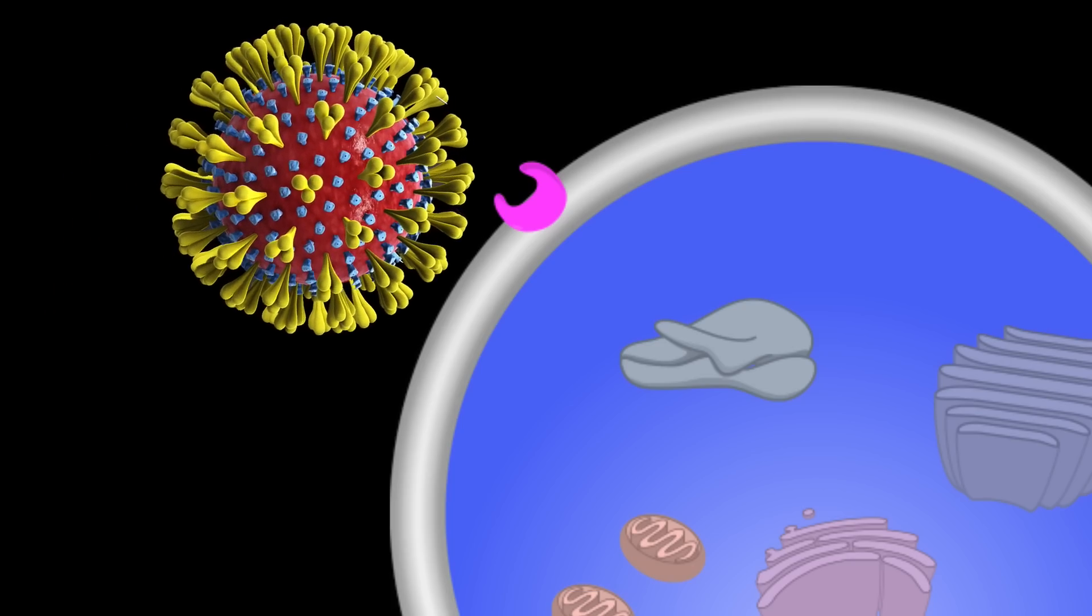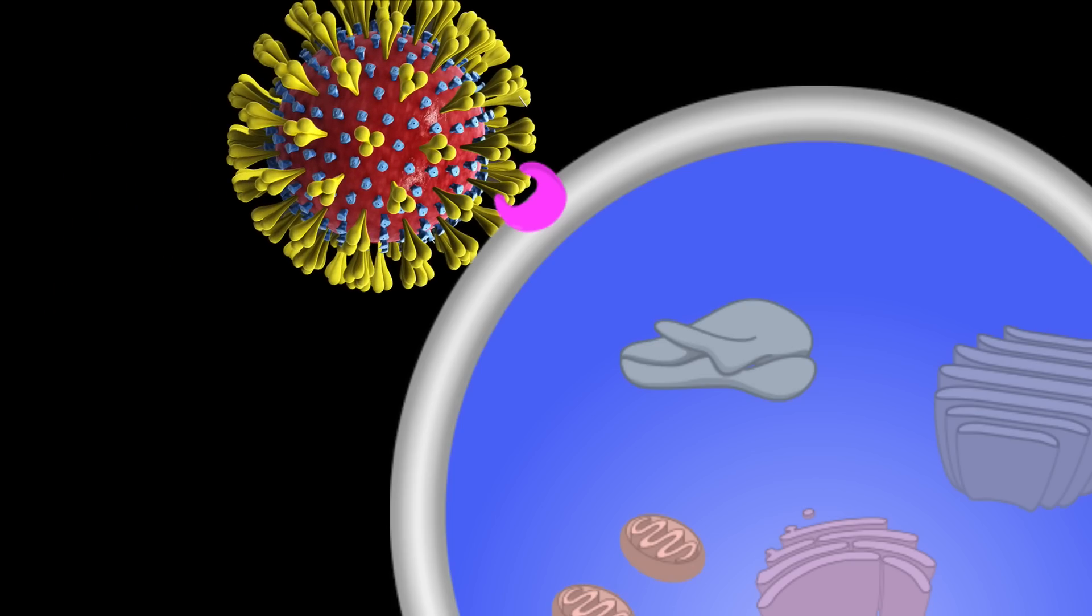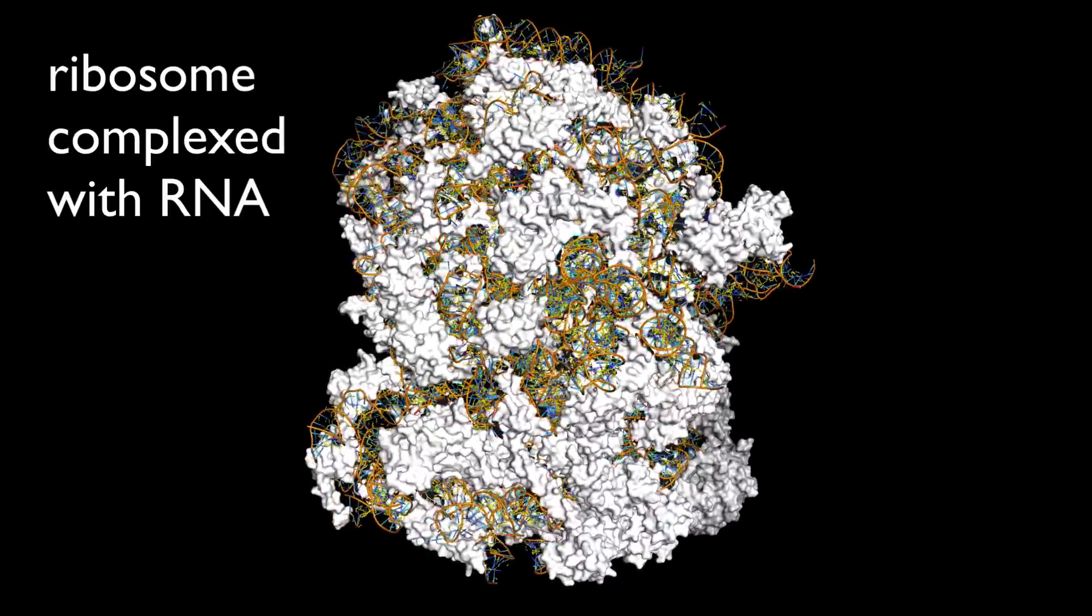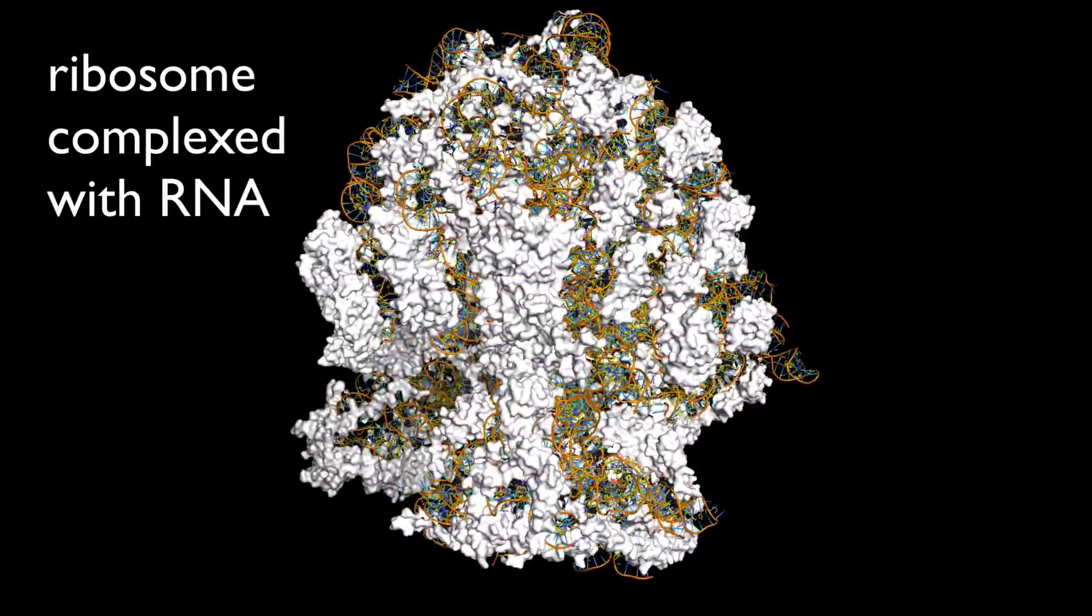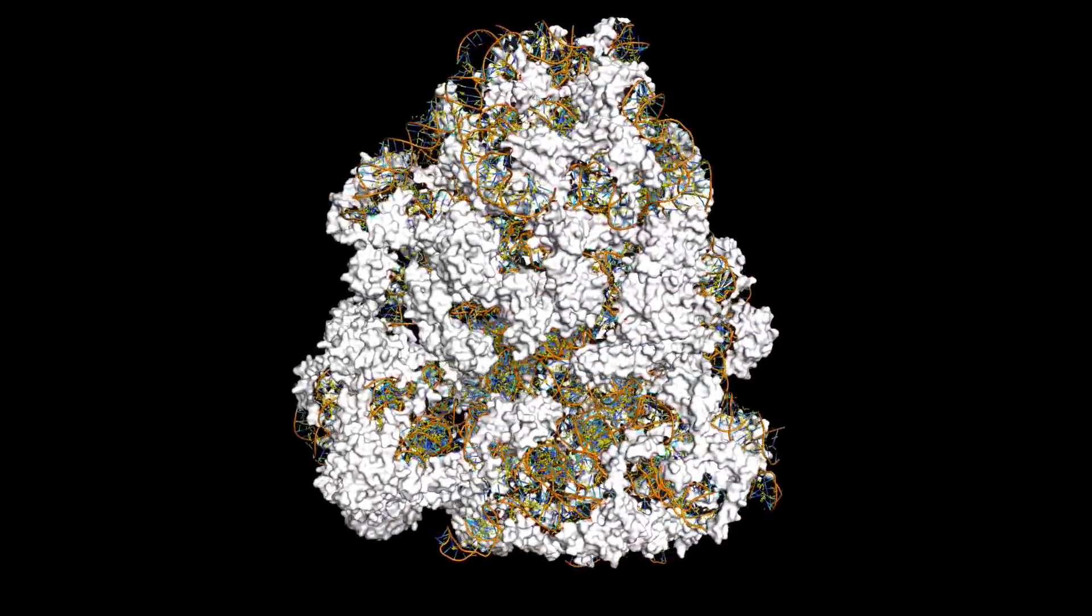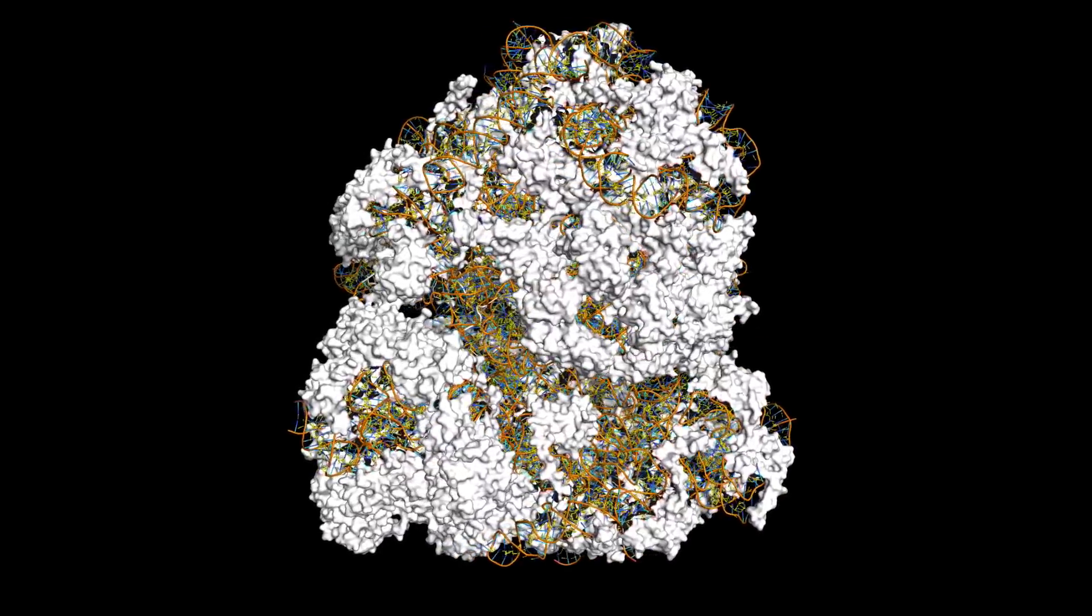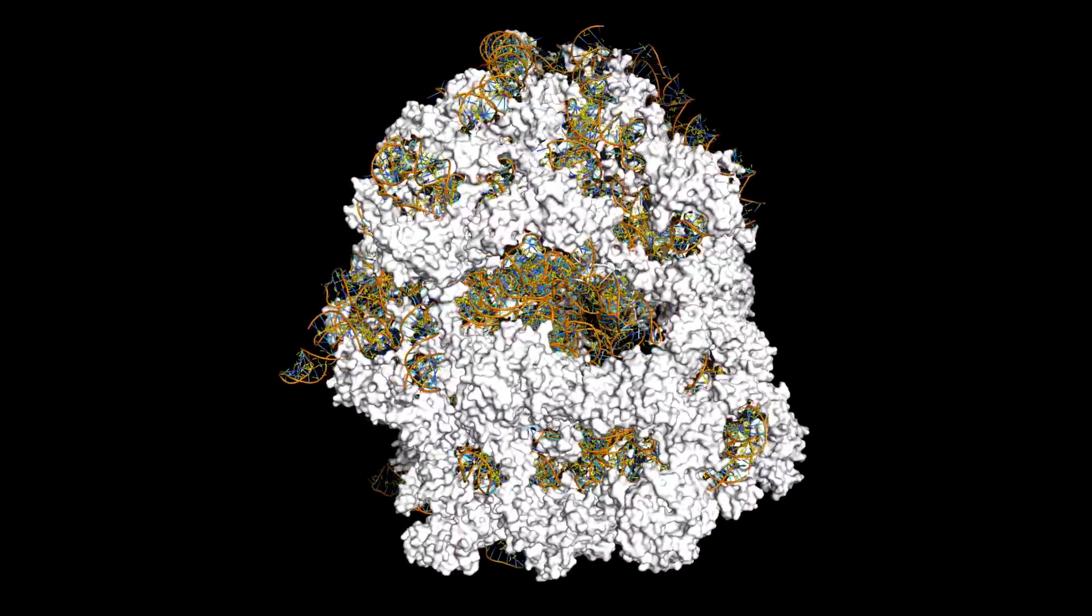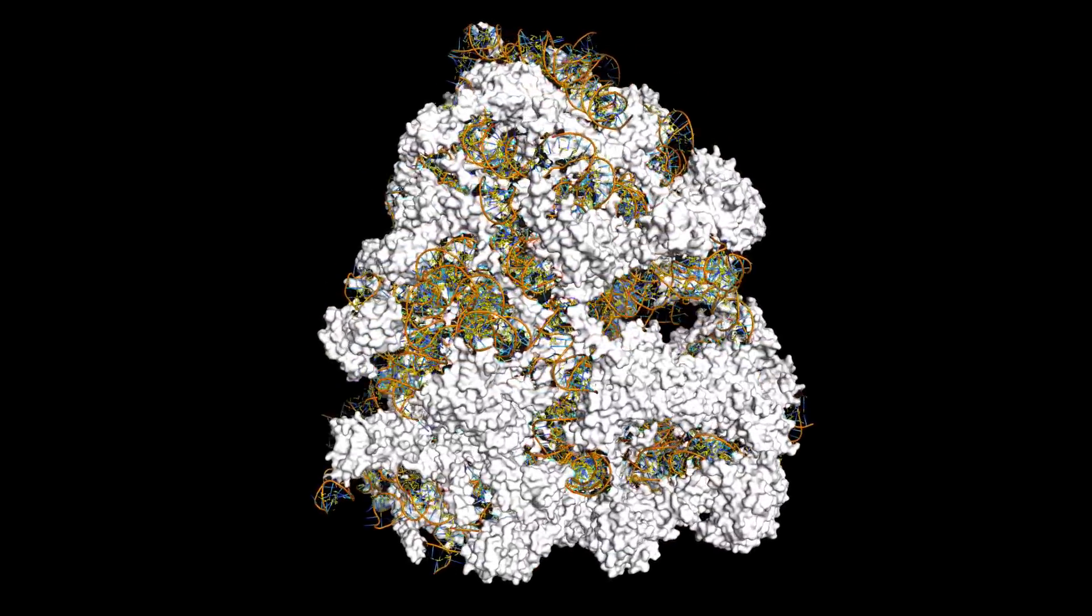If the virus does undergo fusion, viral genetic material is released into the cell. In the case of coronaviruses, this piece of RNA travels to our own cell's ribosome and hijacks them to create its own viral proteins. An interesting thing I learned making this video is that this viral RNA is capable of shifting the three-letter frame of RNA bases that's read by the ribosome. This essentially doubles the peptide sequences that can be made from one single strand of viral RNA.